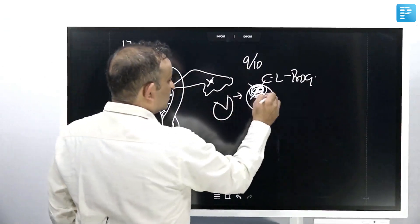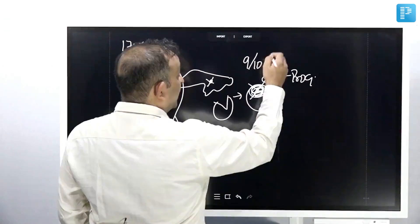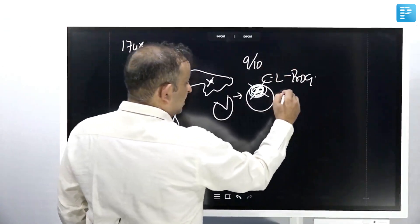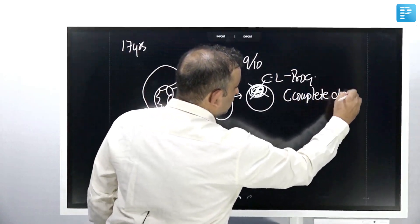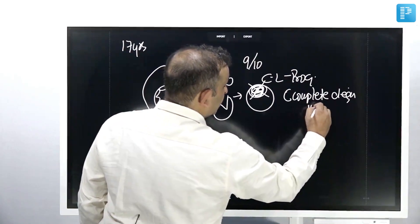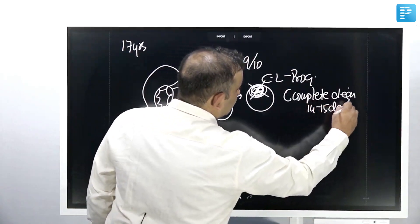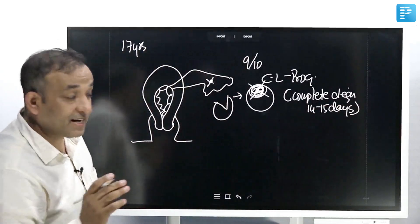So the corpus luteum starts to degenerate, please remember on the 9th to 10th day it starts to degenerate. The complete degeneration MCQ of the corpus luteum takes place in 14 to 15 days. The maximum function of a corpus luteum is the 9th to 10th day.